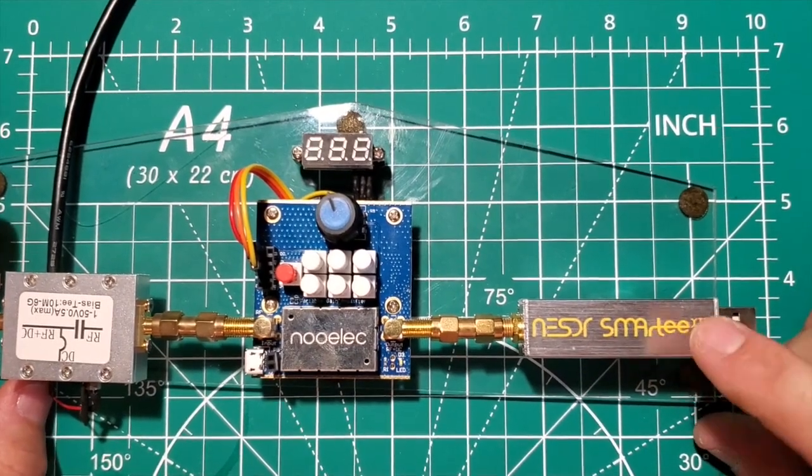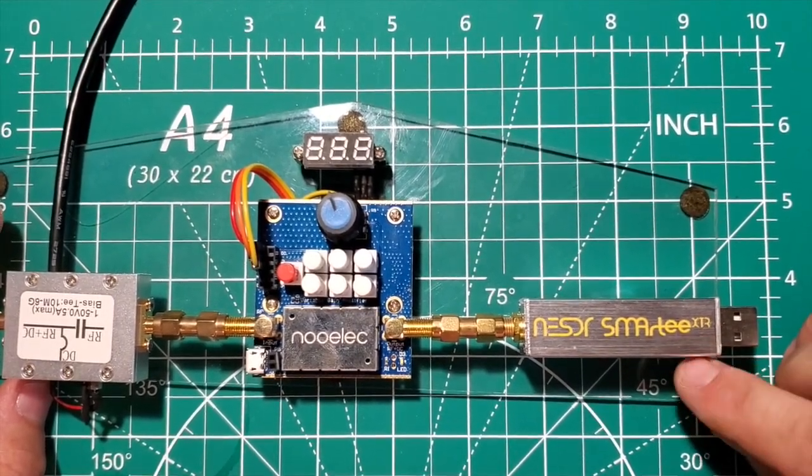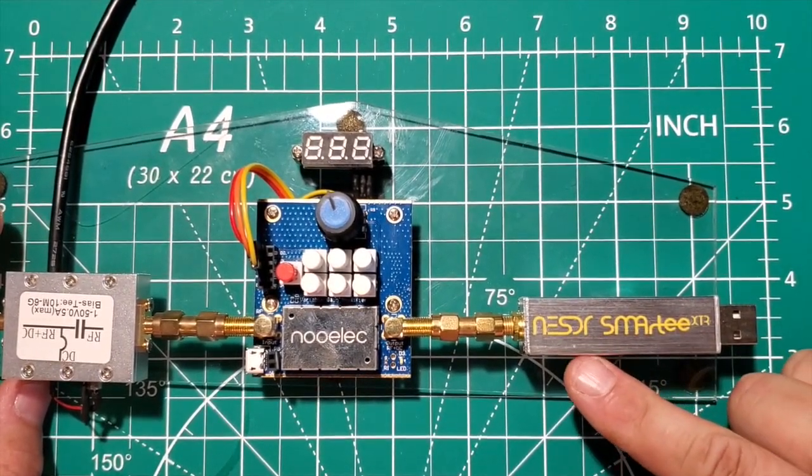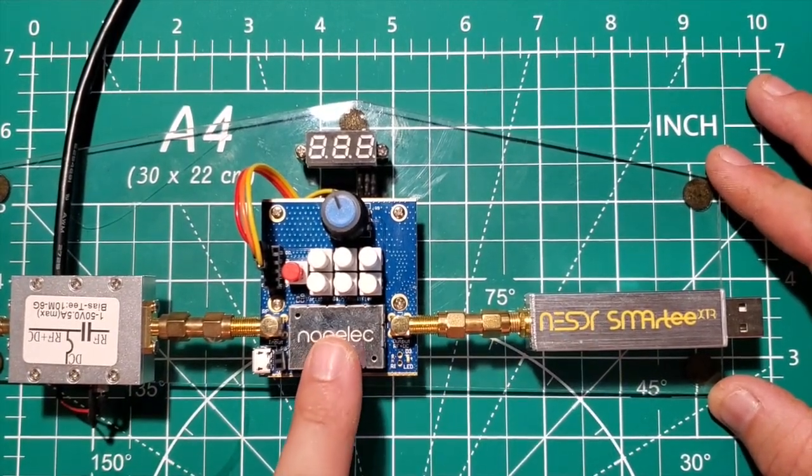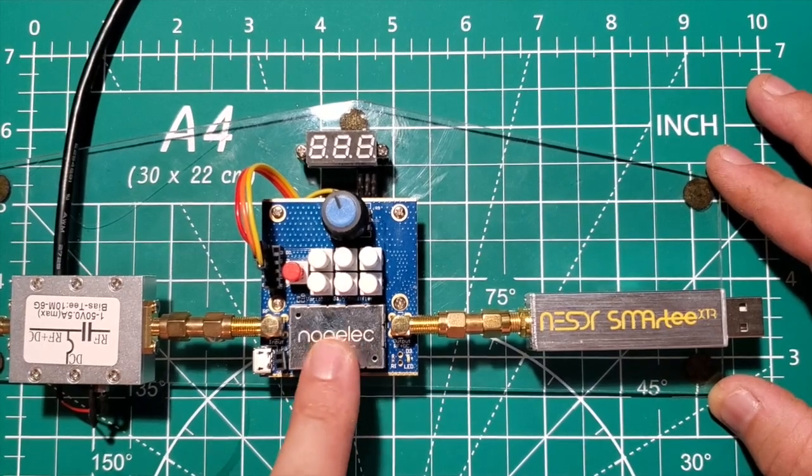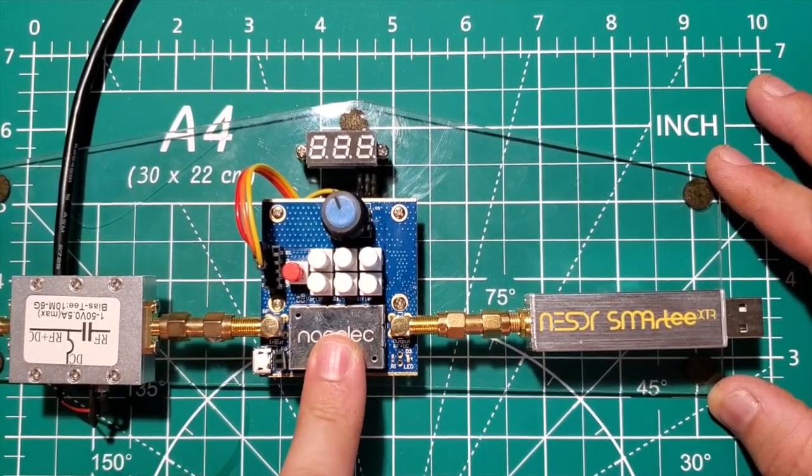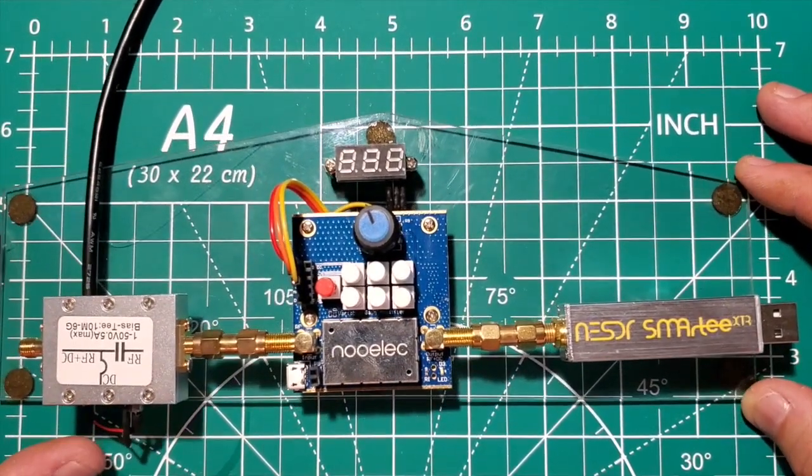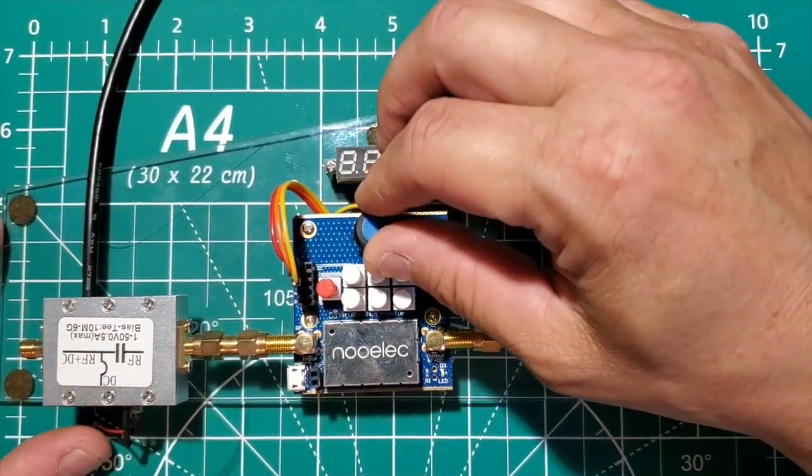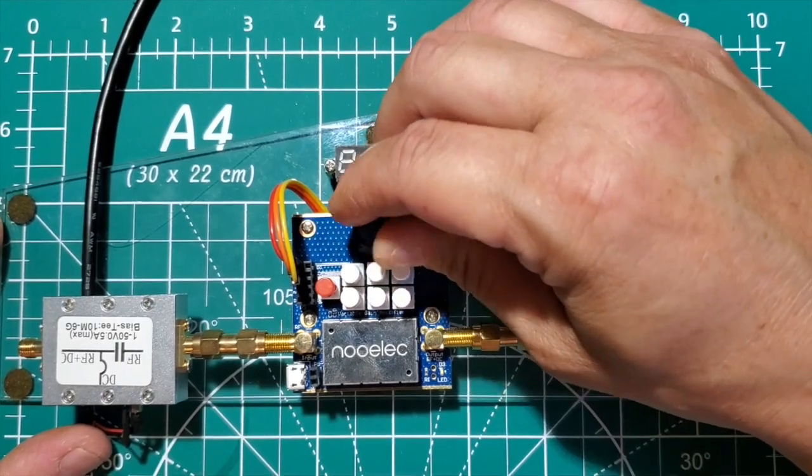Nooelec RTL Smart TXR which has a built-in bias-T which is powering the variable amp here from Nooelec. And this is a pretty nice amp because it's kind of analog and digital.